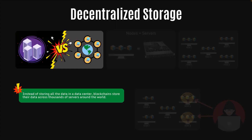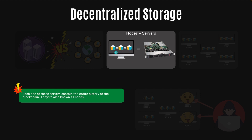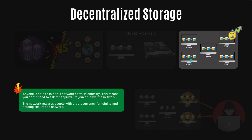Instead of storing all the data in a data center, blockchains store all of their data on thousands of computers around the world. Each one of these servers contains the entire history of the blockchain, so there's redundancy on every single computer — all of them have the same copy of the blockchain on them. These servers are also known as nodes. Anyone is able to create a node, which is basically just a dedicated computer running software that supports the blockchain. Setting up a node is a technical process, but if you're able to connect it to the blockchain, you can earn mining rewards like Bitcoin. Anyone can create these nodes and join the network permissionlessly, meaning you don't need to ask for approval to join or leave.